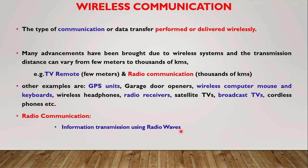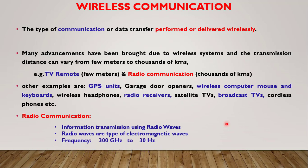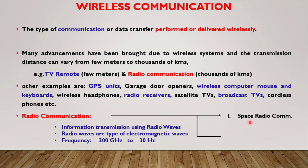Radio waves are basically electromagnetic waves, and the frequency of these waves is in a range of 30 Hz to 300 GHz. Radio communication is further classified into two main categories: space radio communication, which uses one or more space stations like satellites or other space objects; and terrestrial radio communication, which covers all communication except space radio communication or space astronomy.